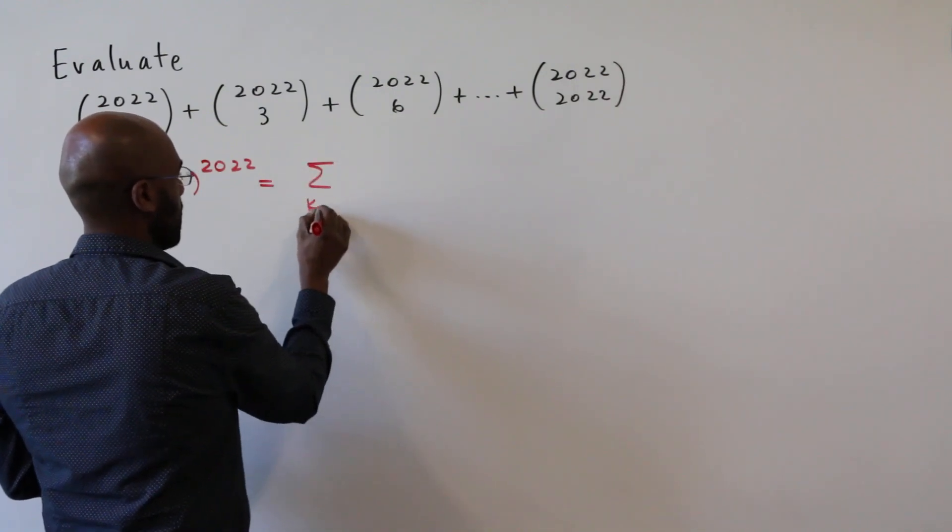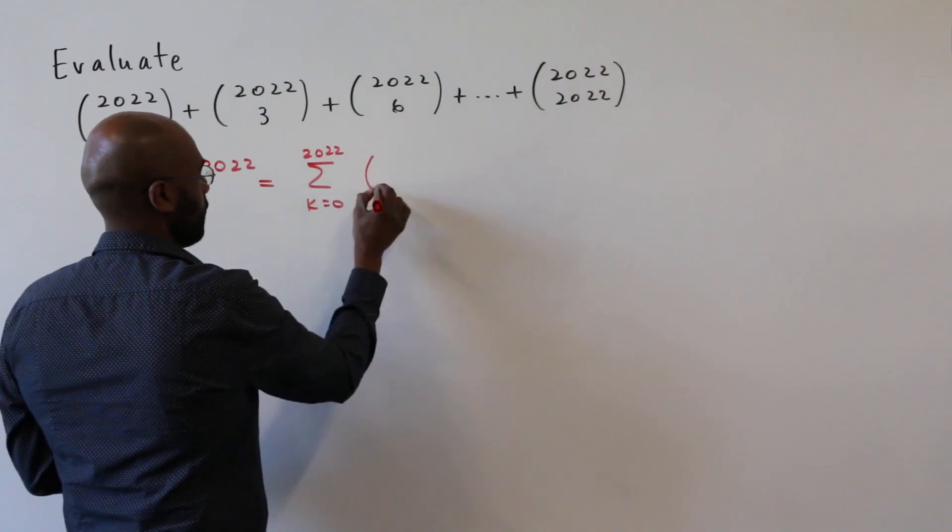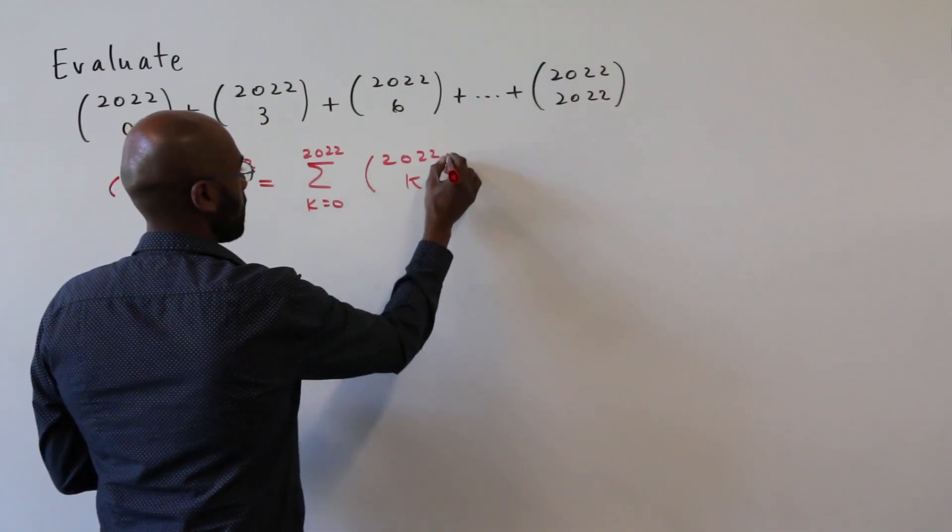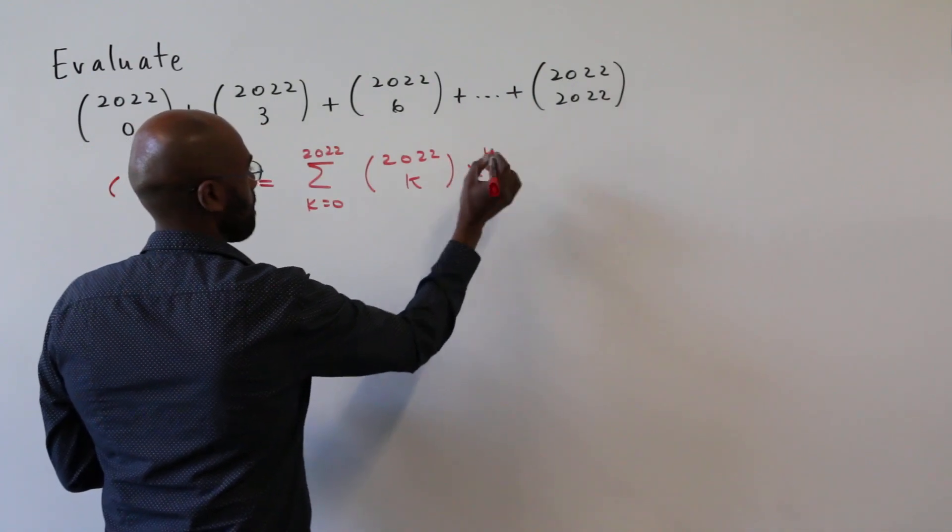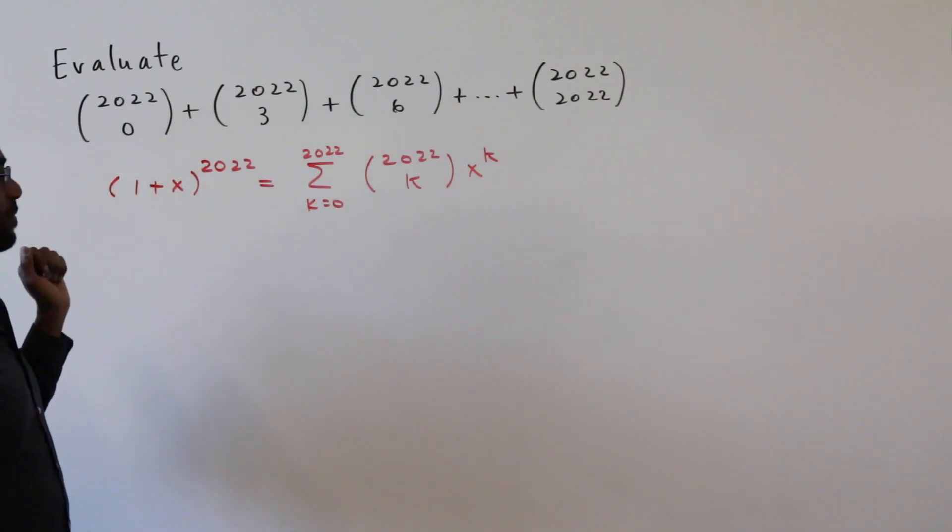It's the sum k equals zero to 2022 of binomial 2022 choose k, x to the k. Okay, so we're going to use that to our advantage looking at this particular sum.